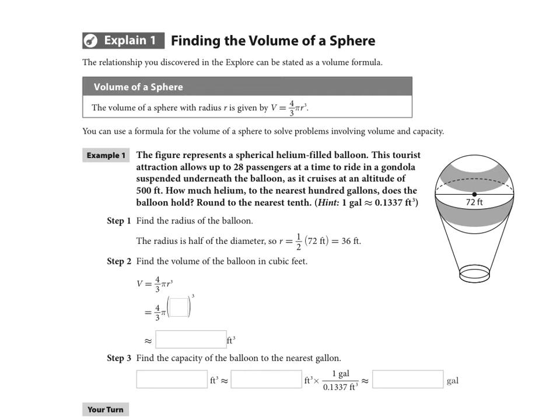It says they allow up to 28 passengers at a time to ride in a gondola suspended underneath the balloon as it cruises at an altitude of 500 feet. How much helium, to the nearest hundred gallons, does the balloon hold?